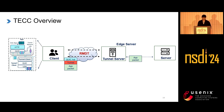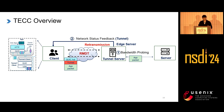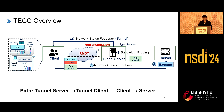In TCC, the tunnel server can retransmit lost data packets and perform bandwidth probing. The tunnel server then transmits the network status to the client through the tunnel connection. The client consequently transfers the network status to the server via the end-to-end connection. Finally, the server calculates the sending rate based on the network status. The network status information may include retransmission rate, RTT, queue length, sending rate, and other information.